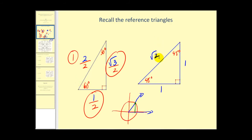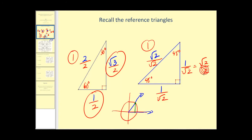For the other right triangle, if we want the hypotenuse to equal one, we divide by the square root of two. The hypotenuse is now equal to one. If we rationalize, we get square root of two divided by two in both leg cases. These are the values we'll also see on the unit circle.